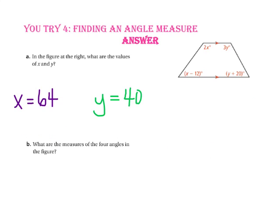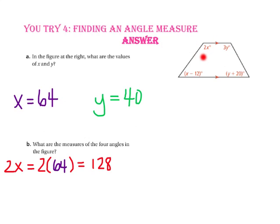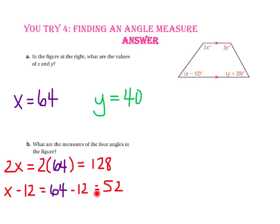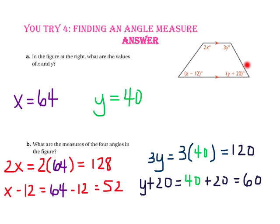For part B, to find the measures of the four angles, we substitute 64 for x and 40 for y. The measure of the first angle is 128 degrees, and the measure of its same side interior partner is 52 degrees. Since 128 plus 52 equals 180, they are supplementary — confirmed. The measure of the third angle is 120 degrees, and the measure of its same side interior partner is 60 degrees. Since 120 plus 60 equals 180, these are also supplementary — confirmed.